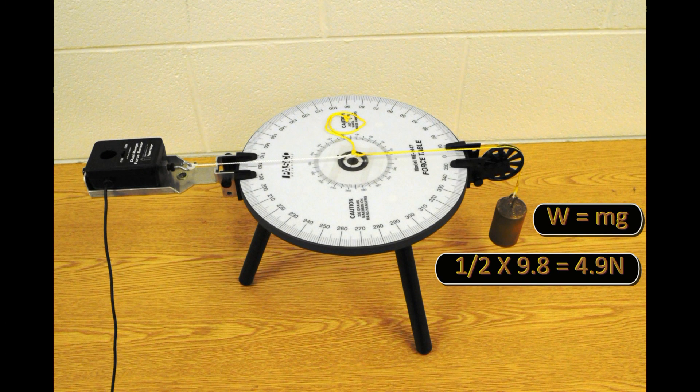Begin the actual experimental work by placing the sensor directly across from a hanging one-half kilogram mass. Since weight is mass times gravity, the weight is one-half kilograms times 9.8 meters per second squared, or 4.9 newtons.